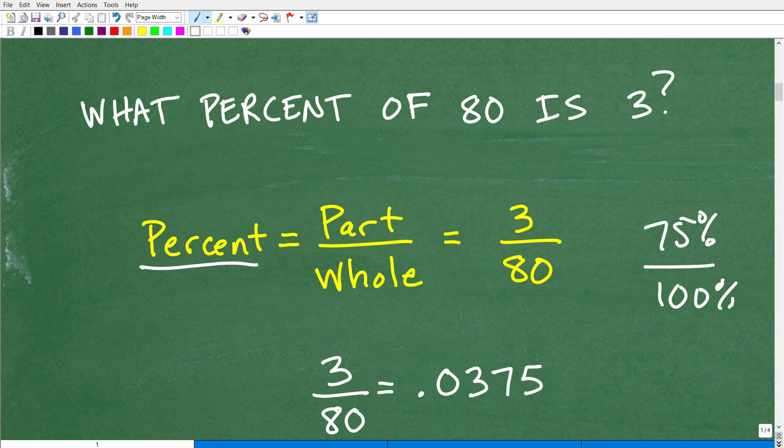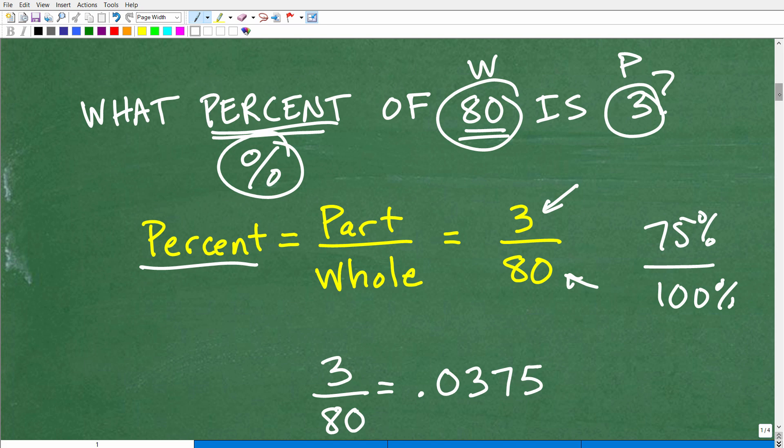So if we look at this problem, what percent of 80 is 3? Well, what is the part and what is the whole? How much is 3 out of 80? So 3 represents a part of 80. So what percent of 80 is 3? This is the part and this is the whole. So when we express it this way, part out of a whole, we have a fraction. That's not a percent. Remember, the question here is asking what percent. So we need to express this part out of a whole as a percent.